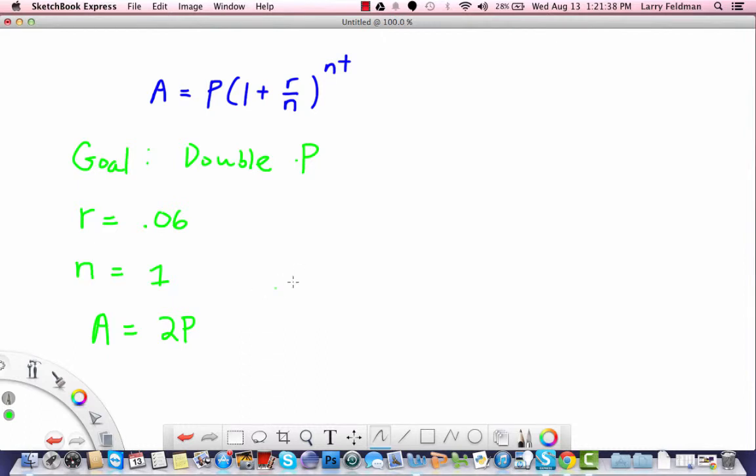Let's substitute everything into the equation at the top. We have 2P equals P times 1 plus R over N, .06 divided by 1 so I'm not going to write that, raised to the NT, and N is 1 so I'm just going to write T there. Now, notice if we divide both sides by P, that cancels with that, that cancels with that, we get 2 equals 1.06 to the T.